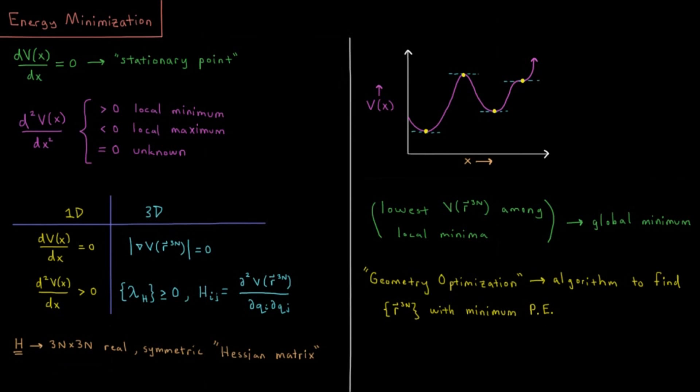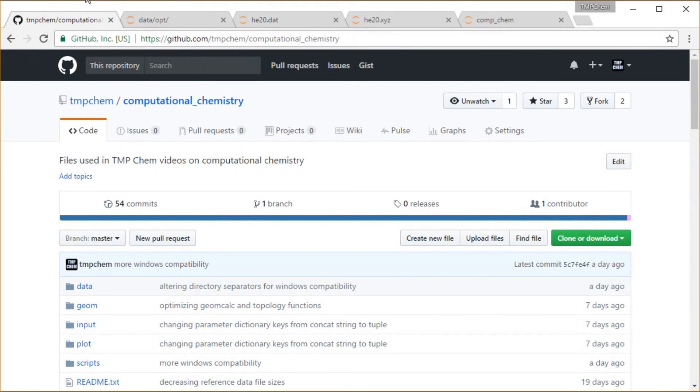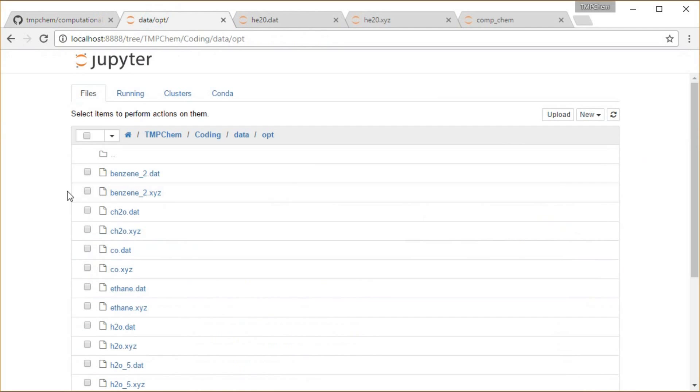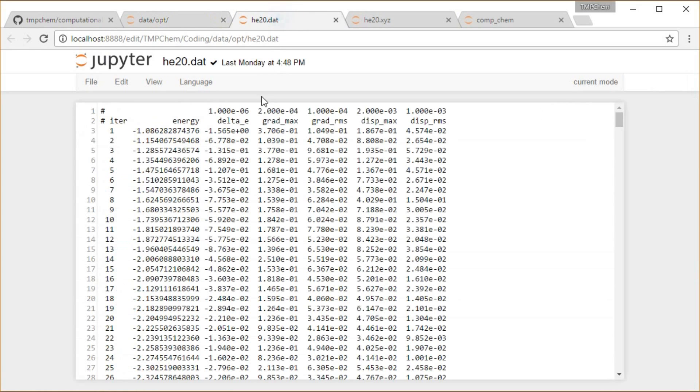So for example, I'm going to take a look here once again in my computational chemistry repository from GitHub, which I have cloned into a Jupyter notebook here locally. So if you go into the data directory down to opt, you'll see the results of the simulation which I'm about to run here.